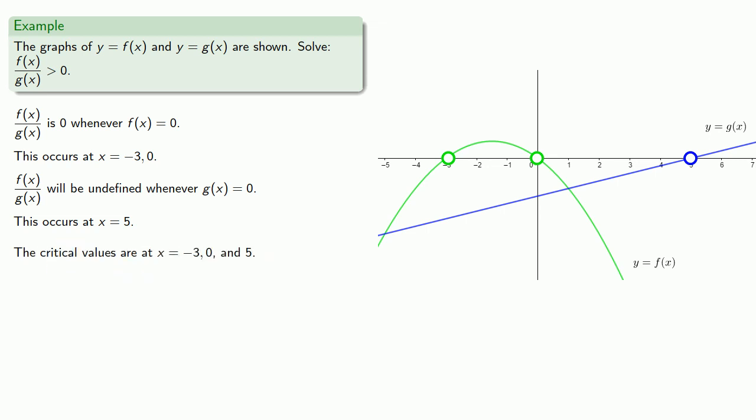Our first step has been to plot those on a number line. Conveniently enough, there is a number line right here. In fact, we've already plotted those points. And we see that there's one, two, three, four regions.